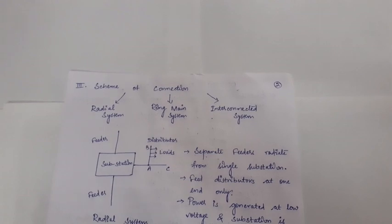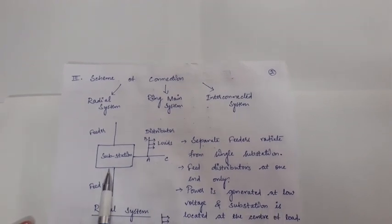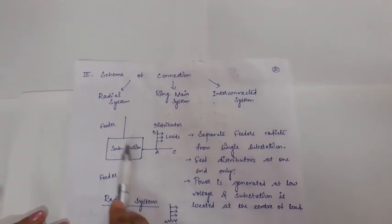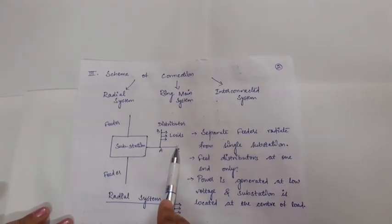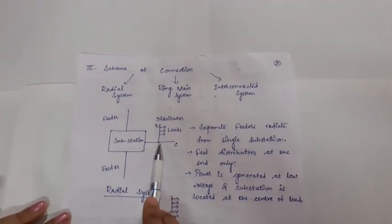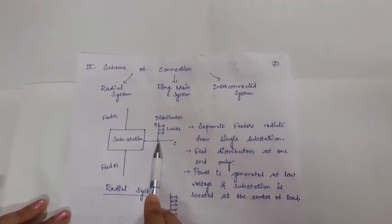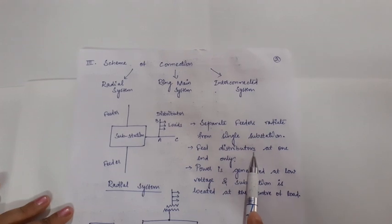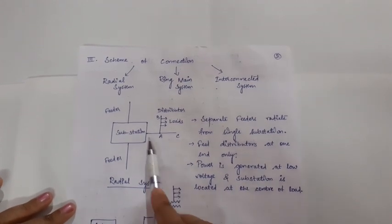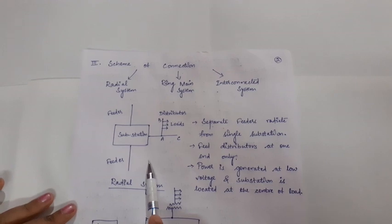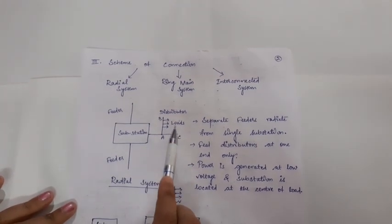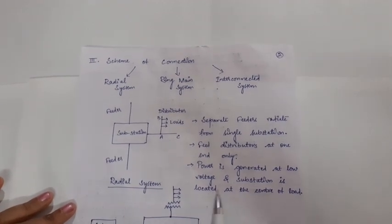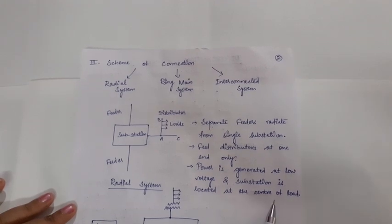In the radial system, the substation is the central part from where the feeders arise. From the feeders, the distributors are connected. Separate feeders radiate from the substation and feed the distributors at one end only, with one distributor per feeder. This radial system is normally used when power is generated at low voltage and the substation is located at the center of the load.